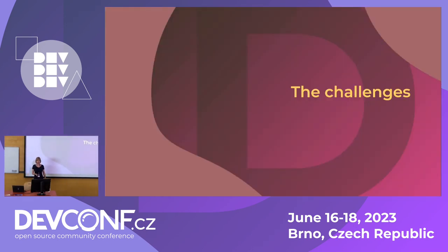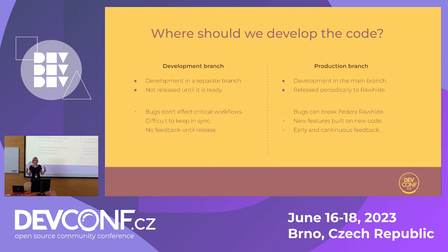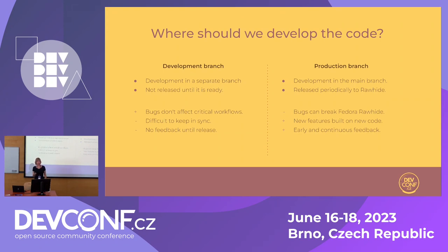So what challenges did we face? The first question was where to develop this code — we had two options. The first was a development branch separate from the production branch. That would be nice because mistakes wouldn't affect critical workflows like Fedora Rawhide. Unfortunately, it means until you release, you get no feedback about whether your ideas work in the real world. We were also afraid of keeping it in sync with the production branch, because new features and requests kept coming and we didn't want to lose those bug fixes — porting everything to a dev branch would have been too much work.